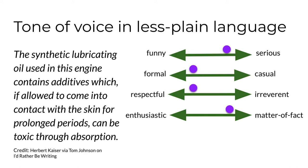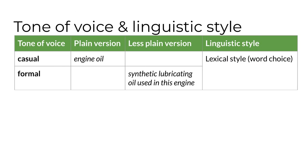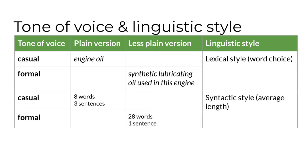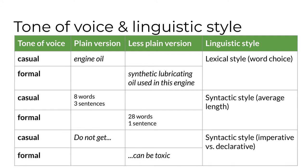Let's consider how linguistic style — language variation — was used to manipulate the tone of voice in the plain and less plain versions of this message about the dangers of engine oil. Lexical style describes one difference: the plain version substitutes engine oil for the longer noun phrase in the less plain version. There are two syntactic style differences as well. The plain version has three sentences with an average length of eight words, while the less plain version is one sentence with 28 words — this makes the plain version more casual. In addition, the plain version uses the imperative structure do not get, while the less plain version uses a declarative structure. This makes the plain version's function as a directive more explicit, personal, and hence more casual.